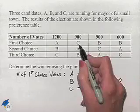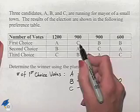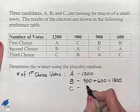Candidate C appears in this row for first choice only in our second column here where we're going to have 900 votes.